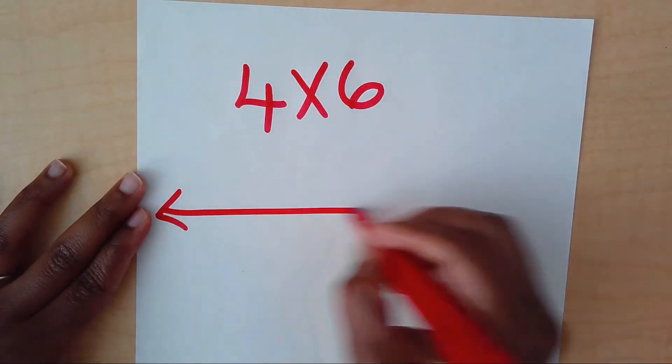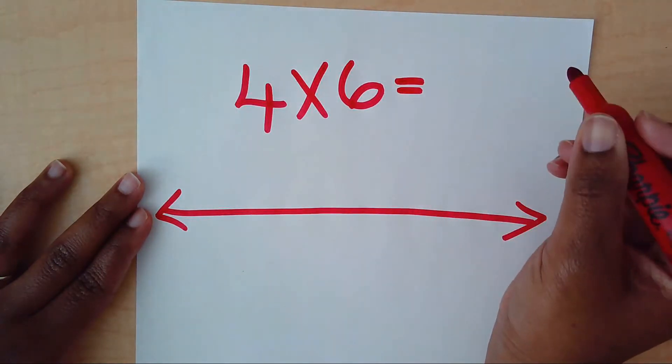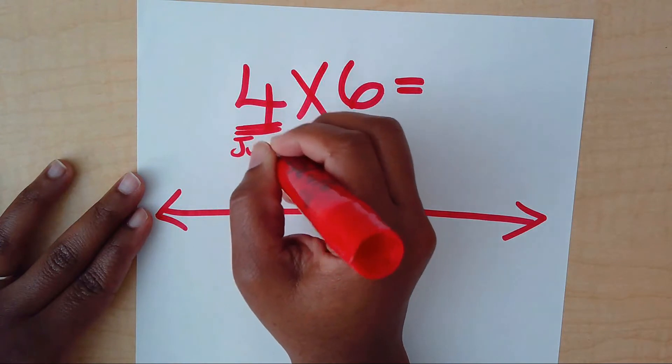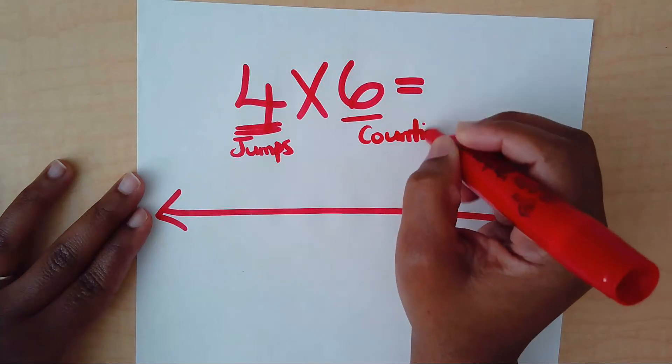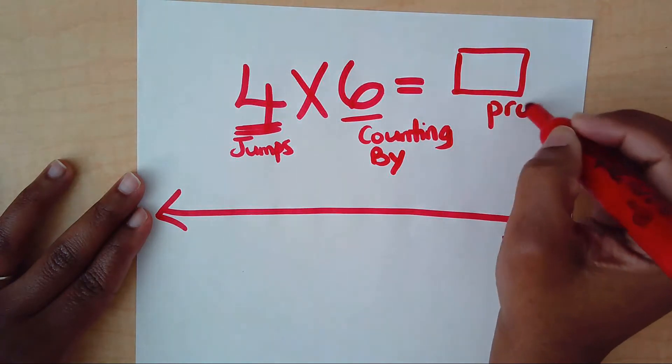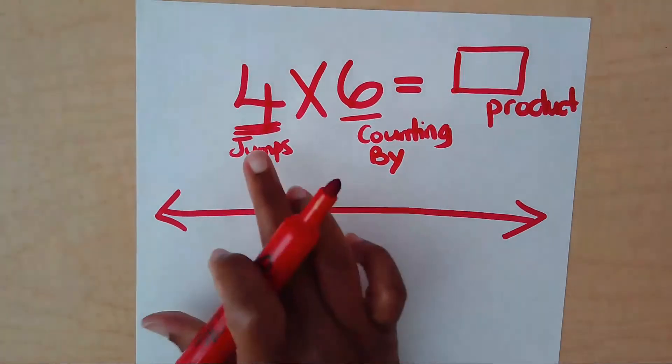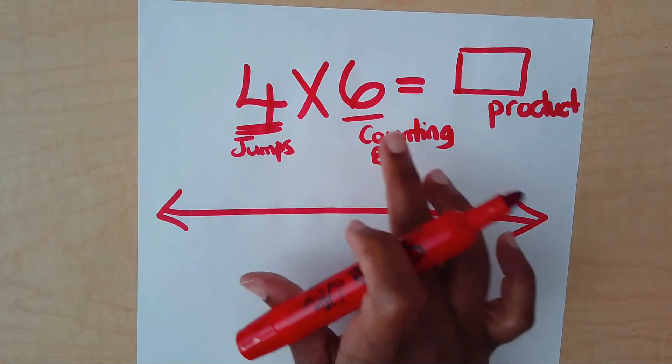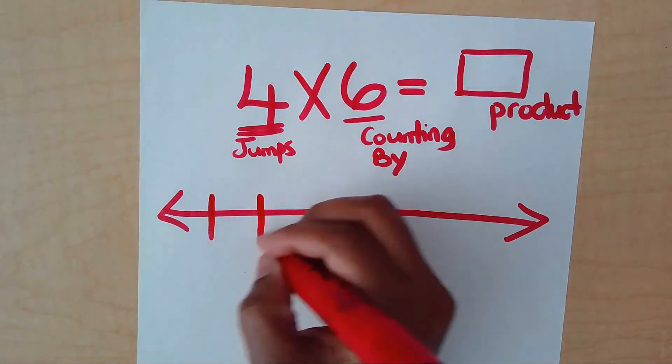So let's first get our number line down. I am going to highlight a few things that need to be noted. The first number, let's call those the jumps. The second number is what we're counting by. And this number right here is going to be our product or the last number it has landed on. So as the video goes on, you'll see that I'll call this J, I'll call this CB and I'll call this P. The J is for jumps, the CB is for counting by and P will be for product.